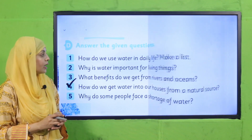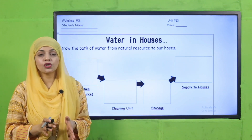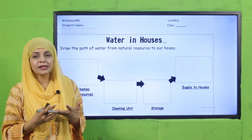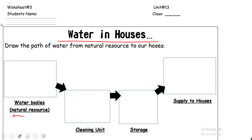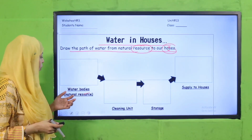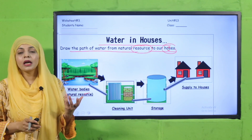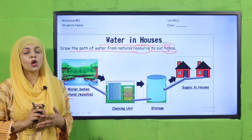I hope everybody has finished the work. Now we will move forward towards a worksheet. You can simply download this worksheet from the description box below this video, or you can also get it in print form. Jo abhi humne written question kiya hai, usi ko hum kaise draw kar sakte hain — let's have a look. For 'Water in Our Homes,' you need to draw the path of water from the natural resource to your houses. You will draw it yourself and also color it.